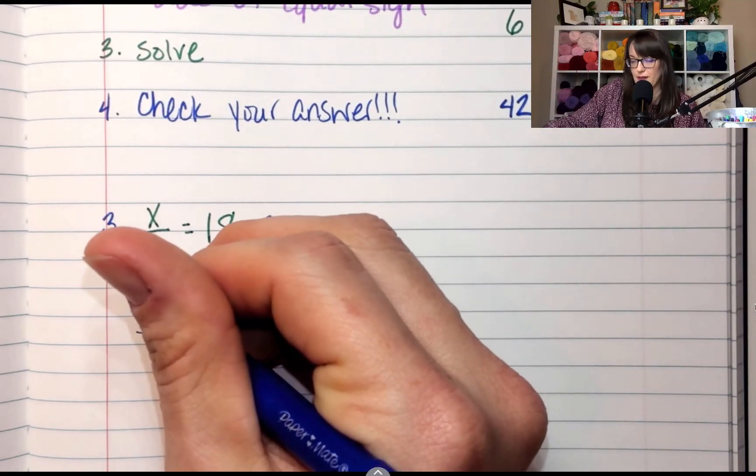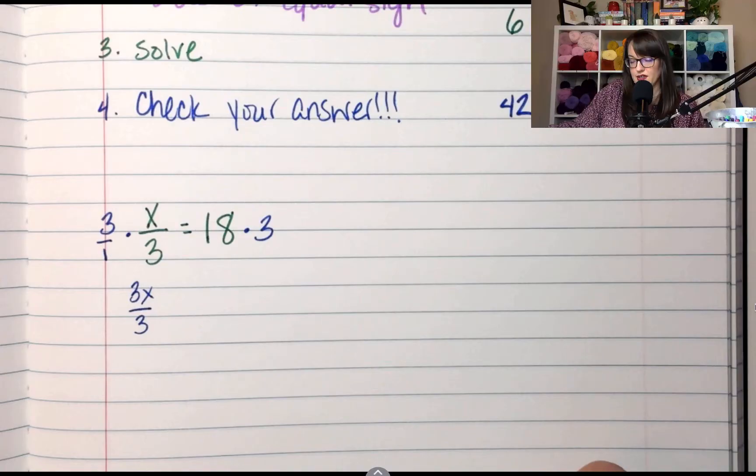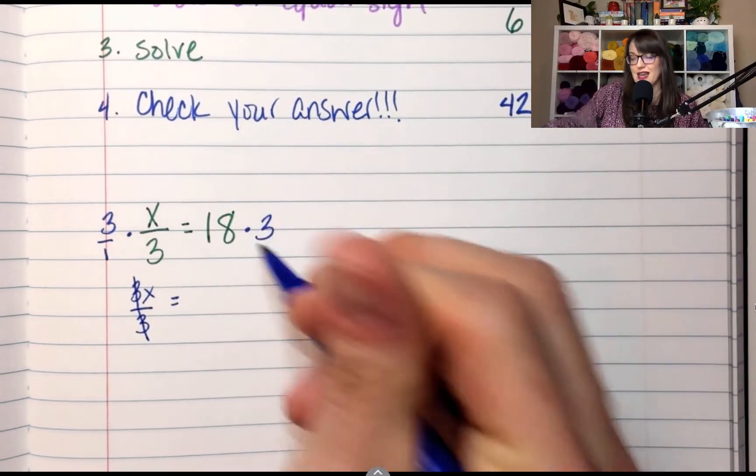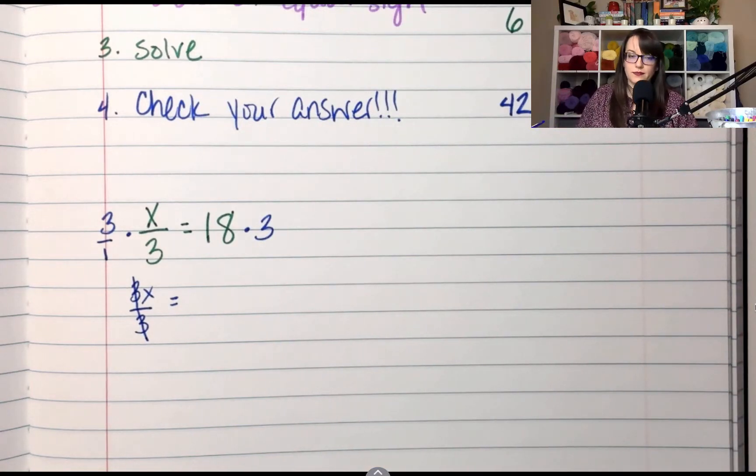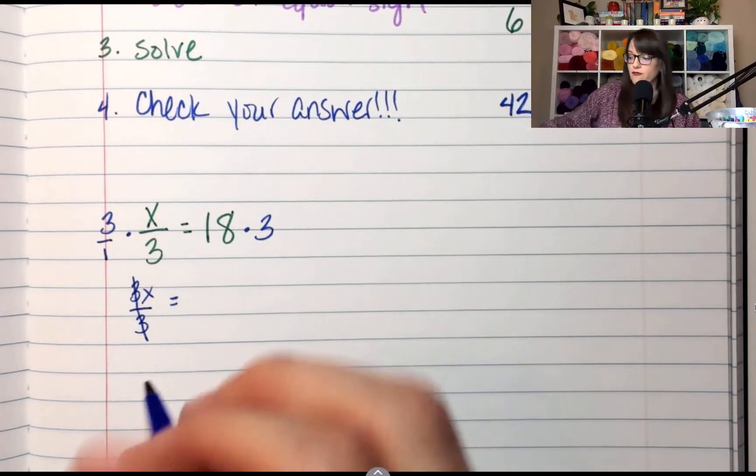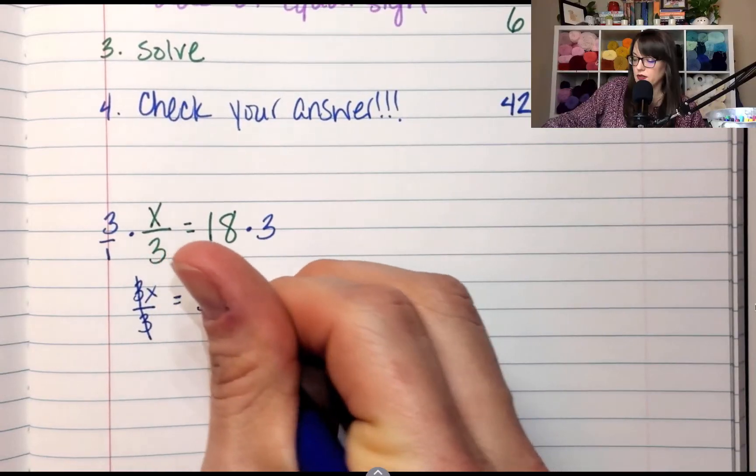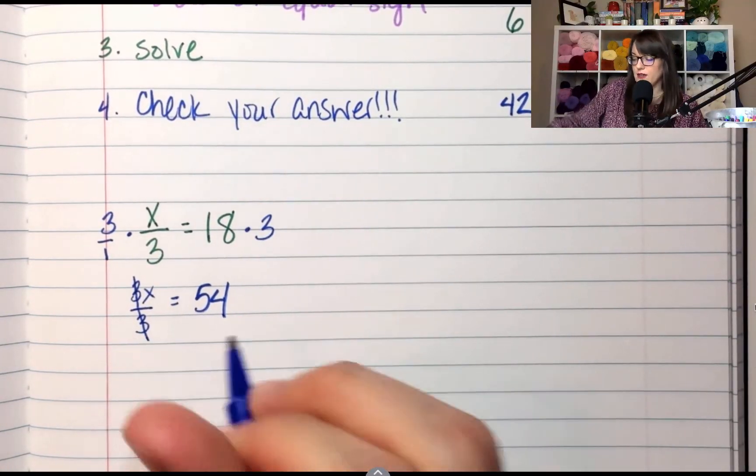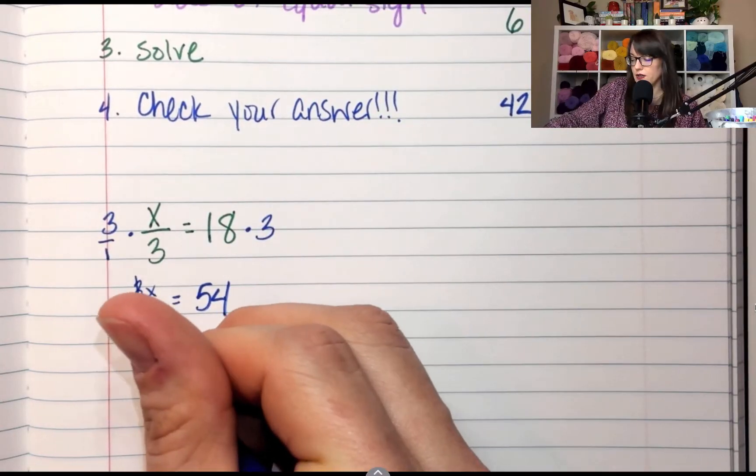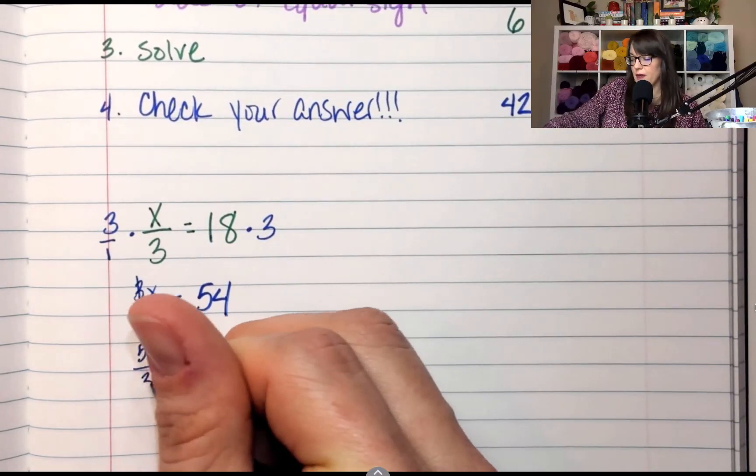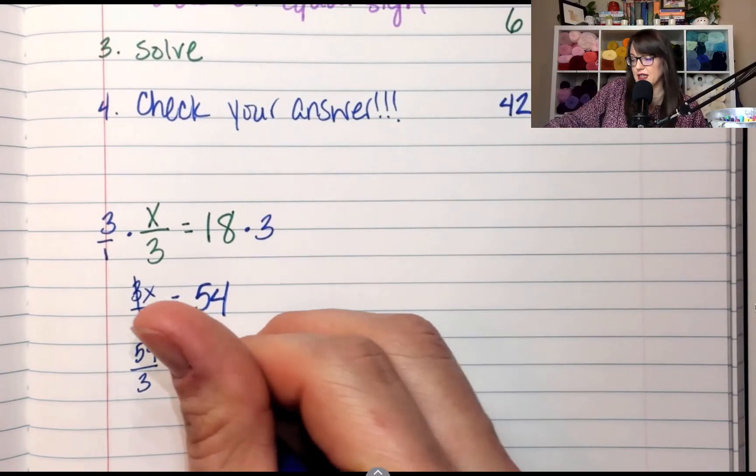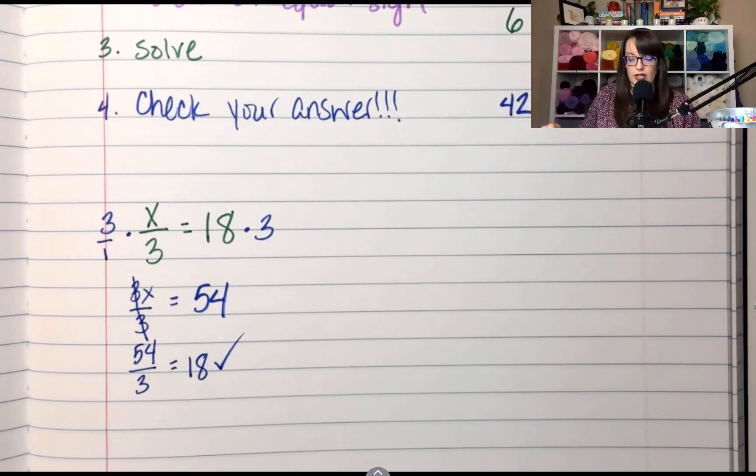What is 18 times 3? 54. And now let's check it. What is 54 divided by 3? It is 18, so I got it right.